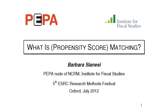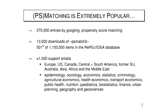They asked me to talk about what is propensity score matching, but as you can see I've actually put propensity score in brackets. I will talk about matching methods more generally, and of course propensity score matching as a case of particular interest. Matching, especially in its propensity score flavor, is increasingly popular — already 277,000 entries just by googling propensity score matching.